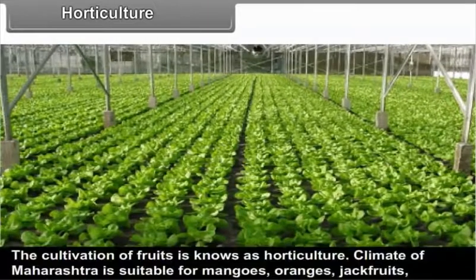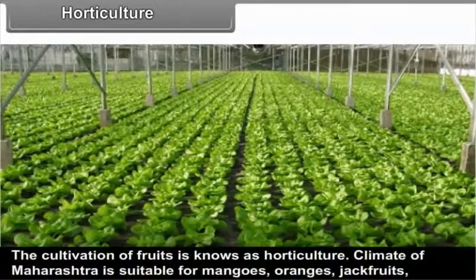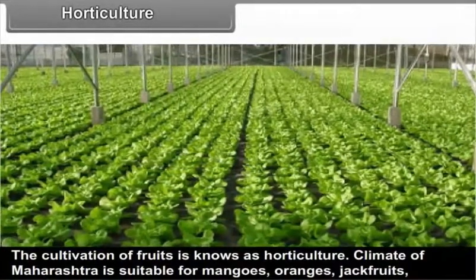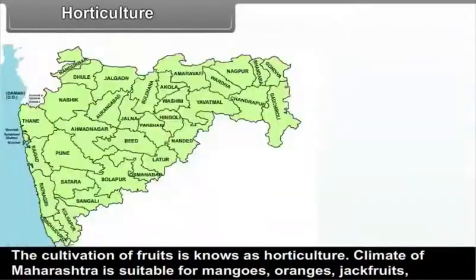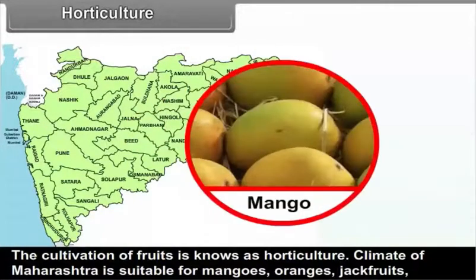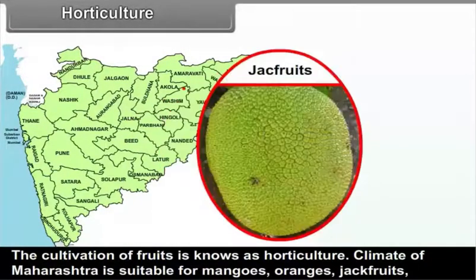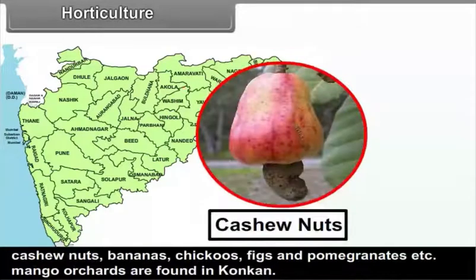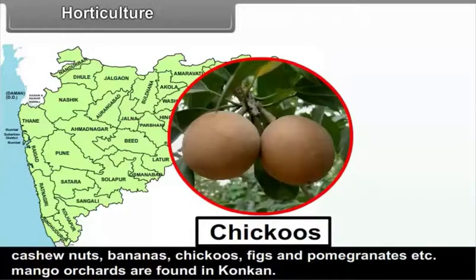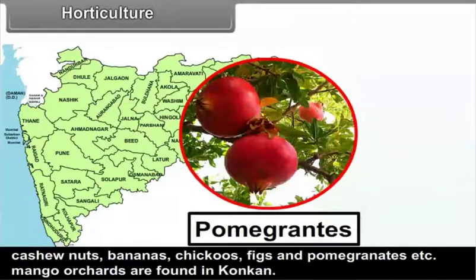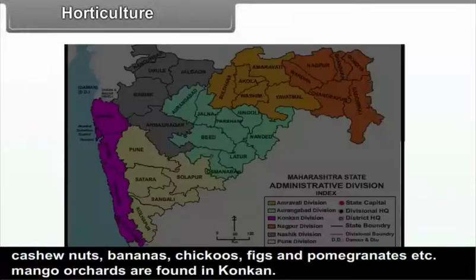Horticulture is the cultivation of fruits. The climate of Maharashtra is suitable for mangoes, oranges, jackfruits, cashew nuts, bananas, chikus, figs, and pomegranates. Mango orchards are found in Konkan. The amount of rainfall in central Maharashtra is low, and this climate is suitable for grapes, figs, pomegranates, orange, sweet lime (mosambi), and berry.